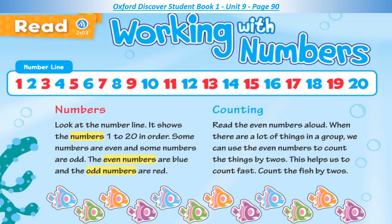Counting. Read the even numbers aloud. When there are a lot of things in a group, we can use the even numbers to count the things by twos. This helps us to count fast. Count the fish by twos.